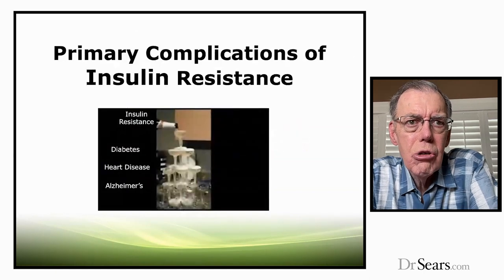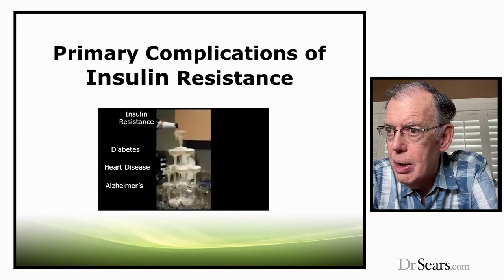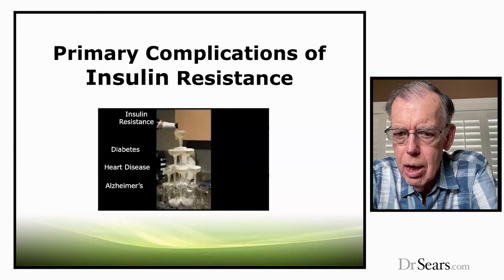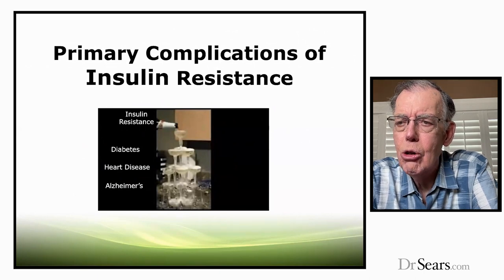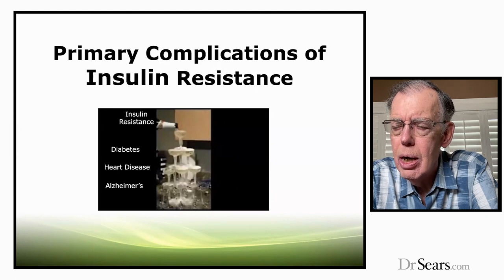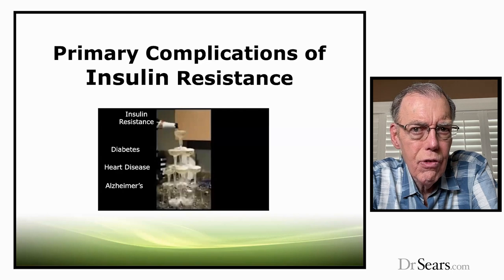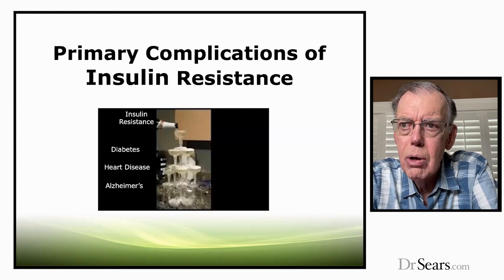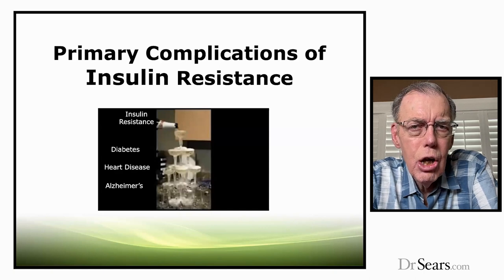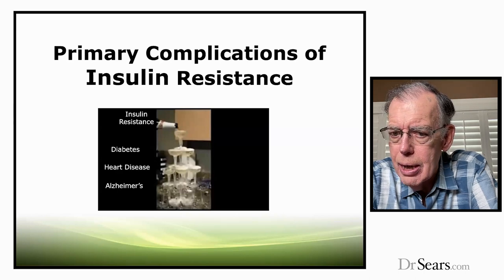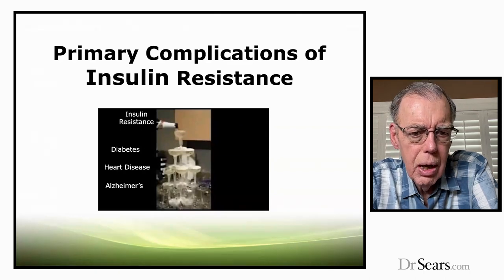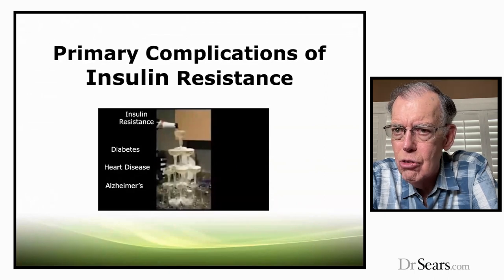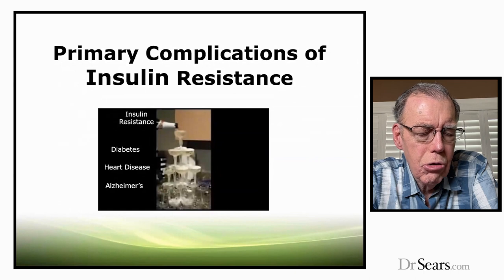Here are the primary complications as your levels of insulin resistance increase. Think of this like a champagne fountain: as insulin resistance gets higher in your body, it fills up the first tier and spills over into the second. What does that give rise to? Diabetes — usually the first chronic disease state that occurs with long-term insulin resistance. But once you get diabetes, your troubles are just beginning. It spills over into heart disease, and your likelihood of getting heart disease is now four times greater. And as insulin resistance is maintained for longer periods, it spills over into Alzheimer's — once you have diabetes, you're twice as likely to get Alzheimer's.